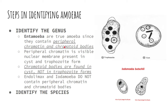Entamoeba contains either or both peripheral chromatin and chromatoid bodies. Peripheral chromatin is visible in the nuclear membrane and is present in both cysts and trophozoite forms. Chromatoid bodies, however, are only found in the cysts — they are not present in the trophozoite forms of our amoeba.